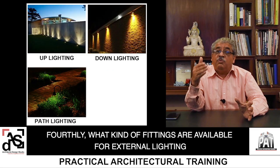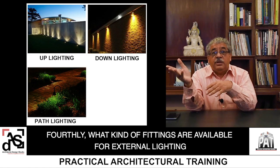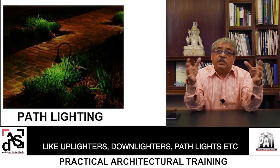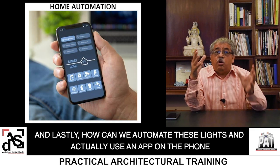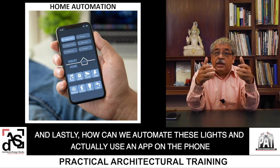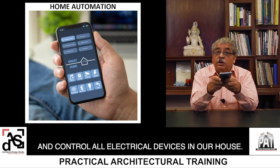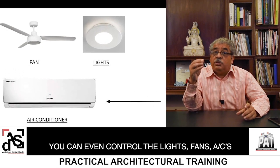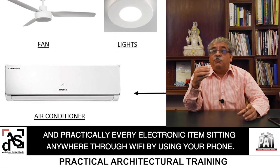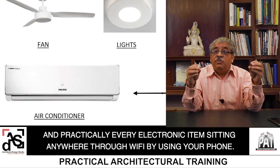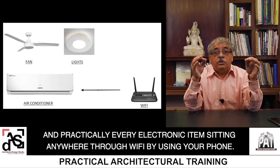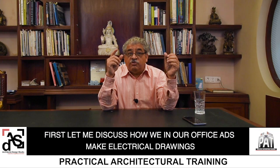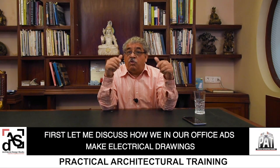Fourthly, what kind of fittings are available for external lighting, like up-lighters for columns, down-lighters, pathway lighters, etc. And lastly, how can we automate these lights and use an app on the phone to control all electrical devices in a house. So let's get started. First, let me discuss how we in our office at ADS make electrical drawings.